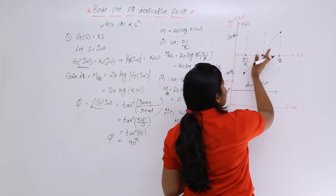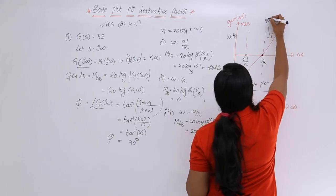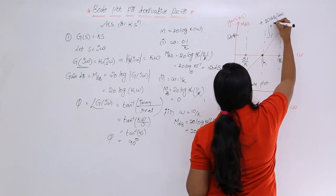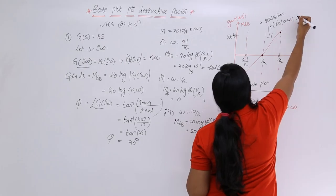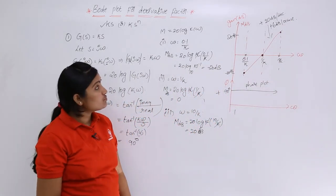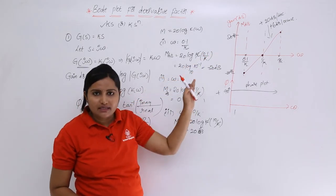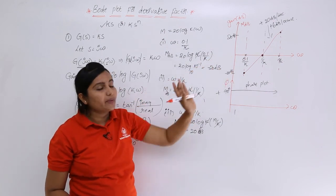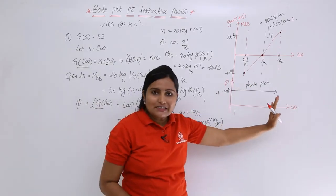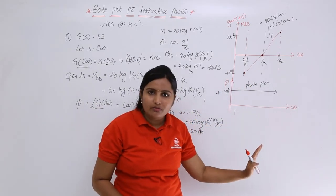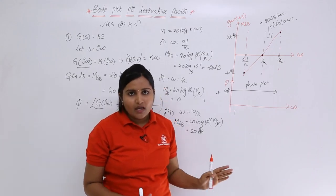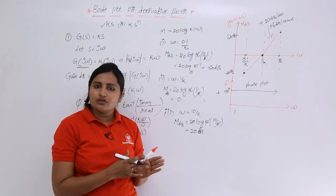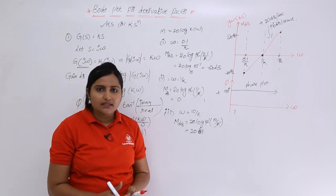The shape of the magnitude plot is rising, with a slope of +20 dB per decade, or equivalently +6 dB per octave. This is the Bode plot for the derivative term G(jω) = Kjω. If you want the same for K·s^n, you need to follow the same procedure, which will be covered in the next video.